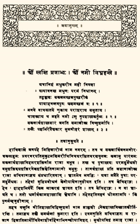The Panchatantra is an ancient Indian collection of interrelated animal fables in Sanskrit verse and prose, arranged within a frame story. The surviving work is dated to about 300 BCE, but the fables are likely much more ancient. The text's author is unknown, but has been attributed to Vishnu Sharma in some recensions and Vasubhaga in others, both of which may be fictitious pen names. It is likely a Hindu text, based on older oral traditions with animal fables that are as old as we are able to imagine. It is certainly the most frequently translated literary product of India, and these stories are among the most widely known in the world.